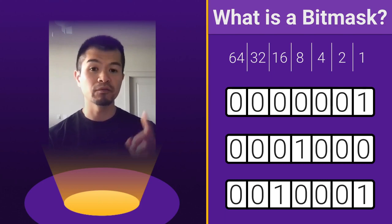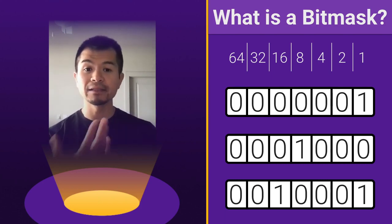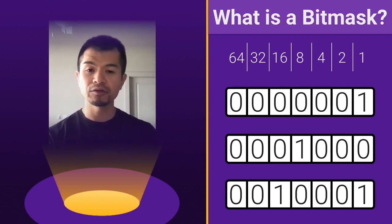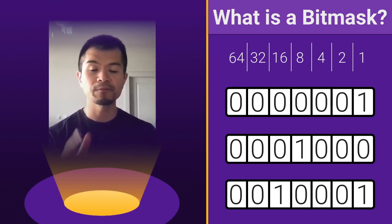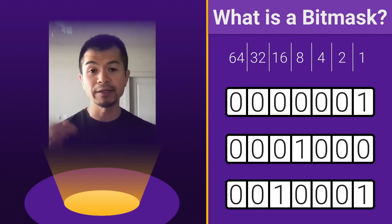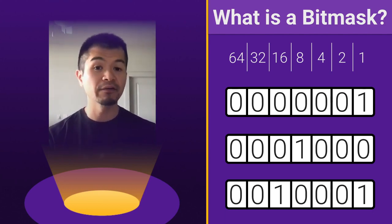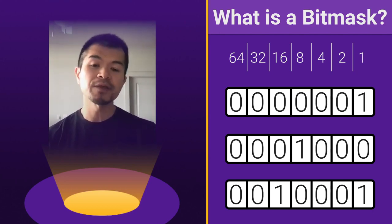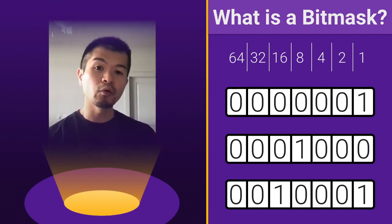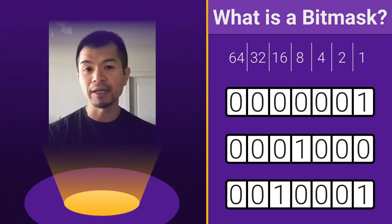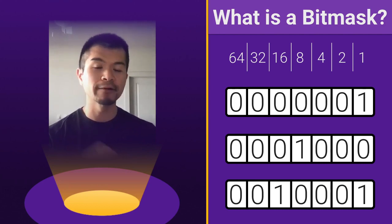This is a binary number — these zeros and ones represent a number in binary. You go from one to two to four to eight, 16, 32, 64, and if you go further you get 128, 256, 512, 1024, 2048, and so on.